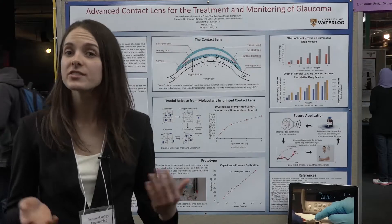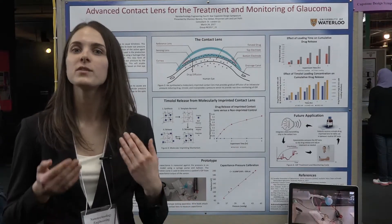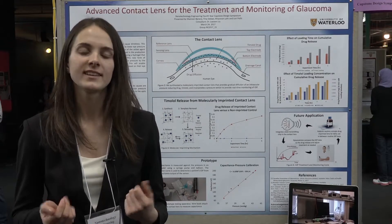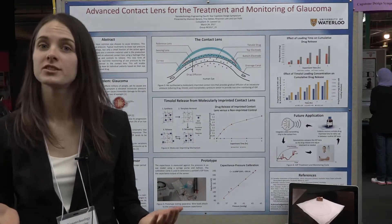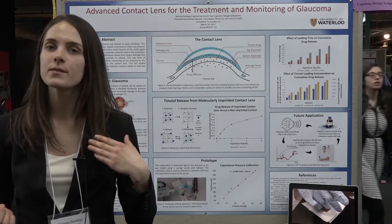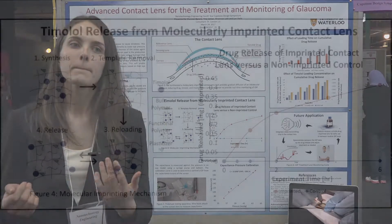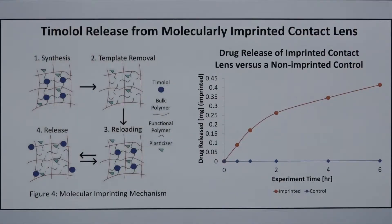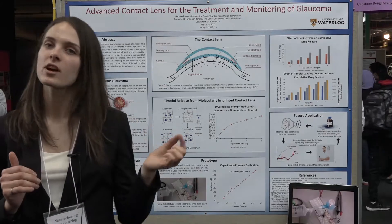The second aspect of our sensor is the drug delivery, and we do this using molecularly imprinted contact lenses. Hydrogels are a common material used for contact lens production today, and they can be easily modified to contain and release a drug. Our hydrogels contain a drug called timolol. A functional monomer undergoes self-assembly with timolol, and then this undergoes polymerization with a bulk monomer to form the hydrogel. We then cross-link the polymer under UV light with a plasticizer, which is water, forming a flexible contact lens layer.